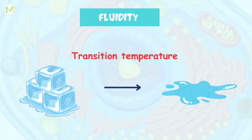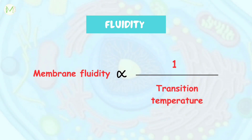Lipids have a unique feature called fluidity, which the cell membrane needs for optimum functioning. Transition from the highly aligned gel state of hydrophobic fatty acids to a disordered liquid state occurs at a temperature called the transition temperature. Membrane fluidity is inversely proportional to transition temperature. The fluidity of a membrane depends on its cholesterol-to-phospholipid ratio; in eukaryotes, this ratio is 1:1. Membrane fluidity also depends on the type of fatty acids, their degree of saturation, and the temperature.